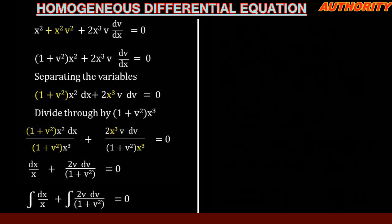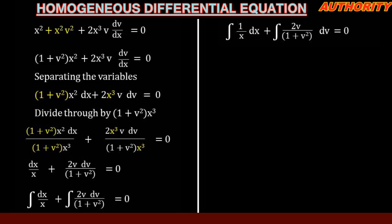Integrating both sides: the integral of dx/x is ln x, and the integral of 2v dv over (1 plus v squared) — using substitution — gives ln(1 plus v squared). So we have ln x plus ln(1 plus v squared) plus c equal to zero.